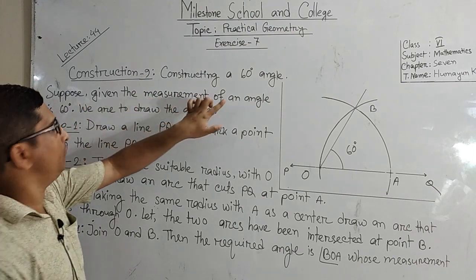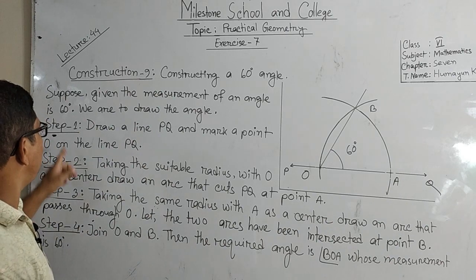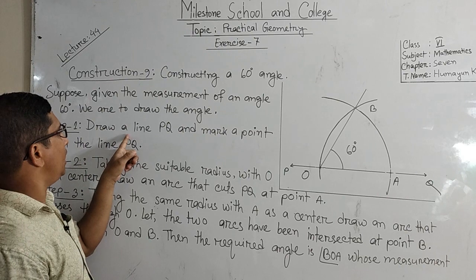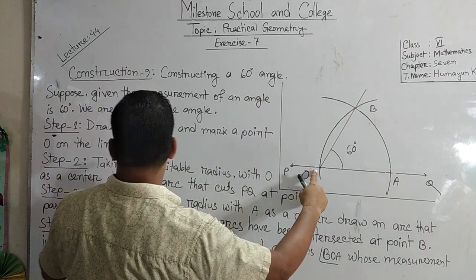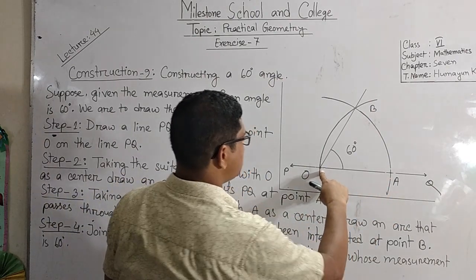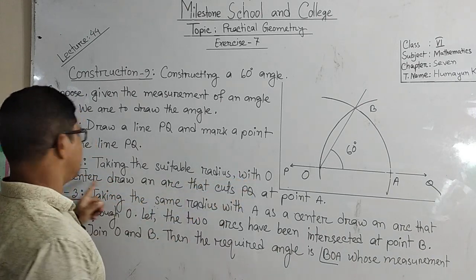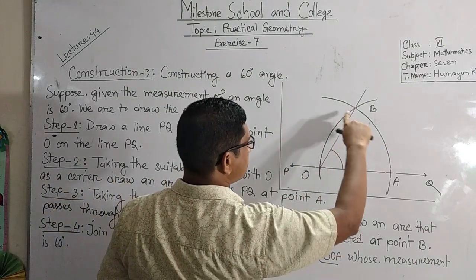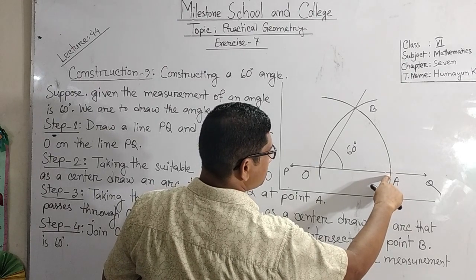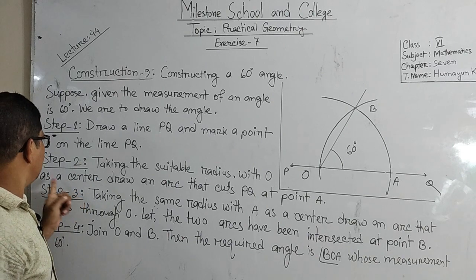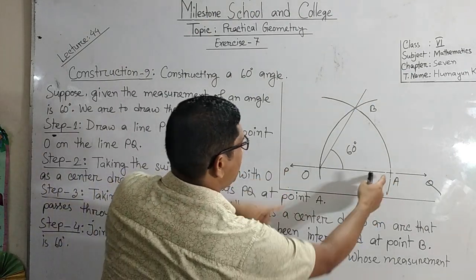Suppose the measurement of an angle is 60 degrees. We have to draw the angle. Step 1: draw a line PQ and mark a point O on the line PQ. Step 2: taking the suitable radius with O as a center, draw an arc that cuts PQ at point A.